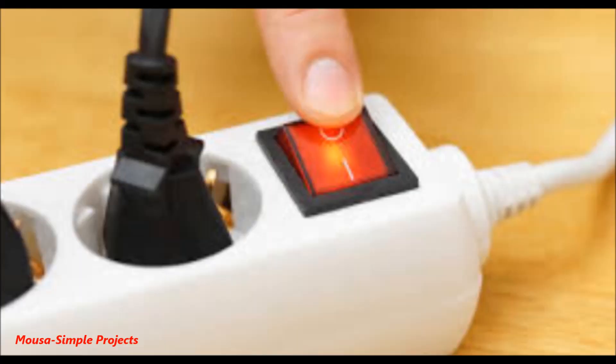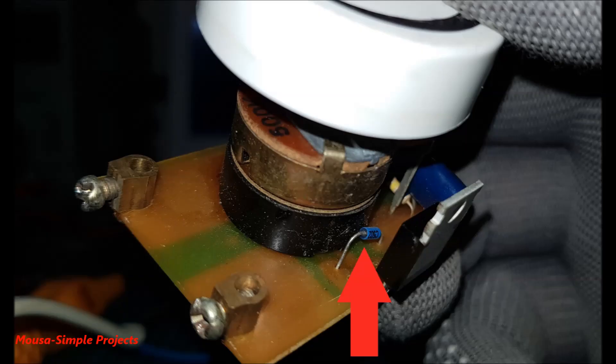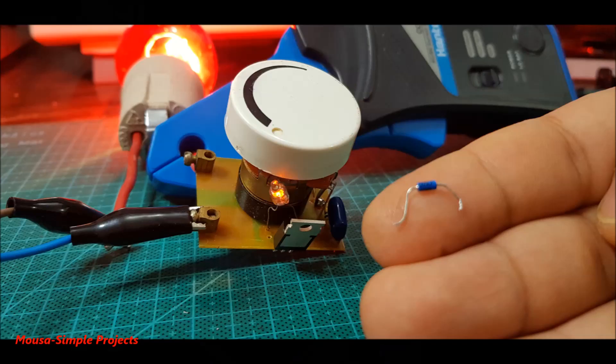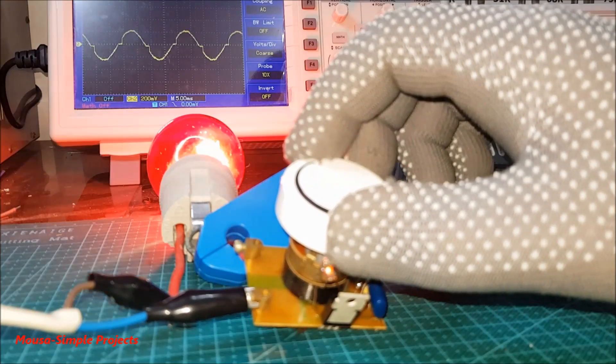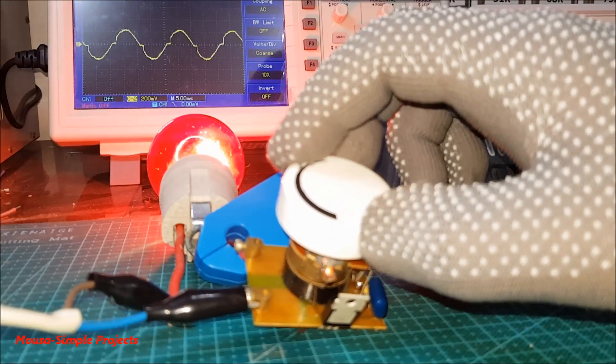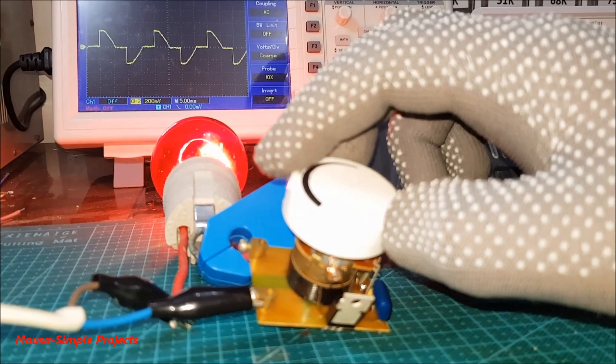The common use of the neon lamp is voltage indicating in electric devices. But you also can use it in light dimmers instead of the diode. In this circuit, I replaced the diode with a neon lamp and it works well.